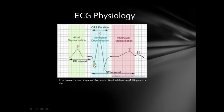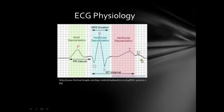We have the P wave, the QRS, and the T. The P wave represents atrial depolarization. The QRS complex is ventricular depolarization, and the T wave is ventricular repolarization. Atrial repolarization is submerged within the QRS complex, so you cannot really see it on an ECG. The U wave is sometimes seen in a normal ECG and is believed to represent papillary muscle repolarization, but it could also be an indicator of hypokalemia.